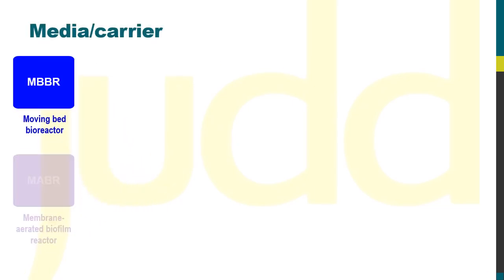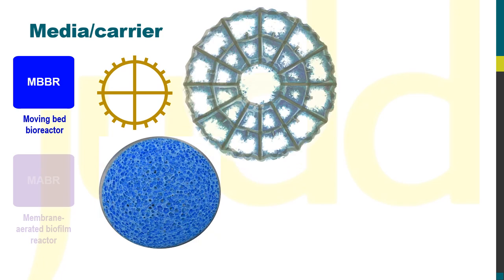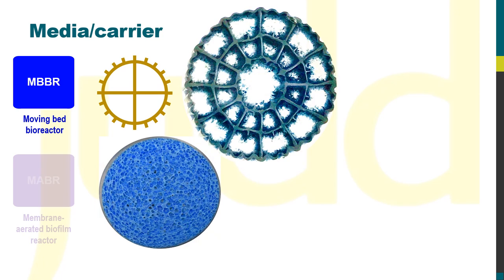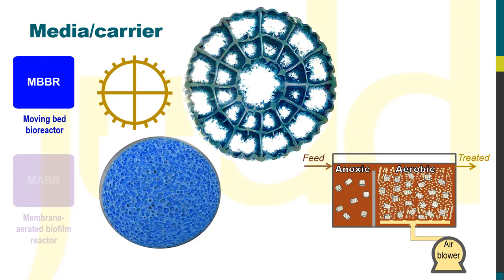The MBBR media comprise pieces of inert materials or carriers which can be of various shapes and sizes, and on whose surfaces biofilms form. It's the bacteria in the biofilm which perform the biological treatment in the MBBR process tank, in the same way as the bacteria in the flocs of the suspended growth processes. The biofilm-coated carriers are suspended in the process tank through aeration, which also provides dissolved oxygen to the biofilm.